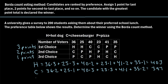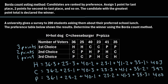Lastly, we repeat the process for pizza. Pizza ends up with a total of 400 points. So out of these three choices, hot dog had the most points with 403, meaning hot dog is the winner using the Borda count method.